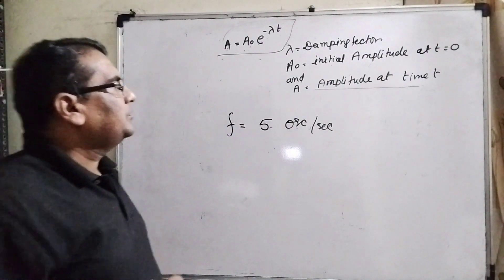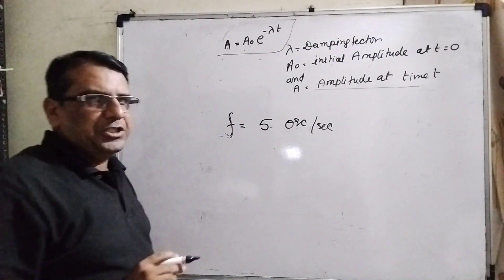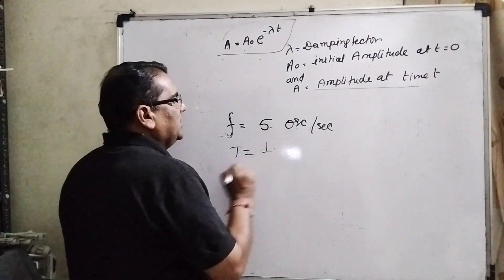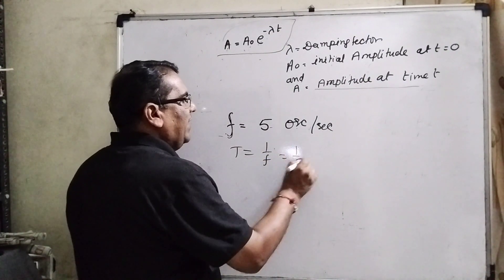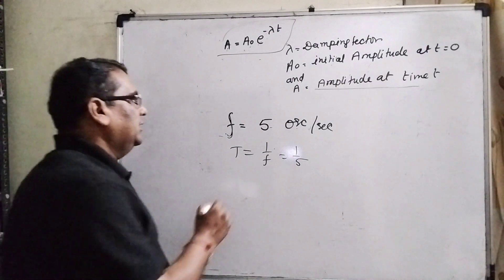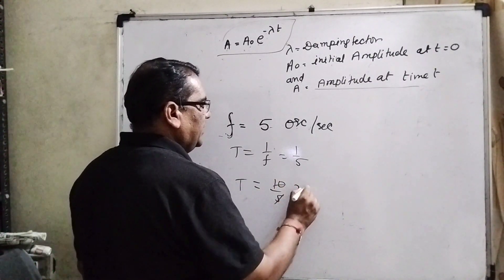In the question we have given frequency 5 oscillations per second. Then time period is 1 upon frequency, means 1 by 5. And what is the time in 10 oscillations? Then t equals 10 by 5, means 2 seconds.